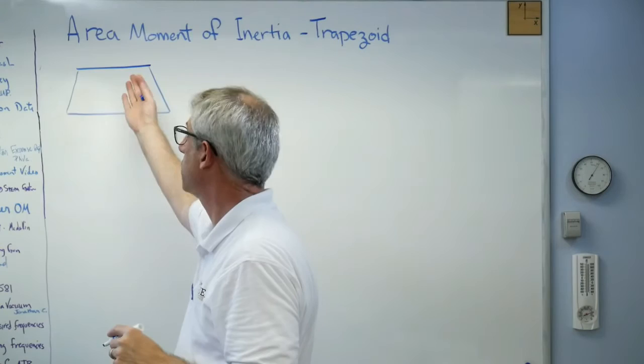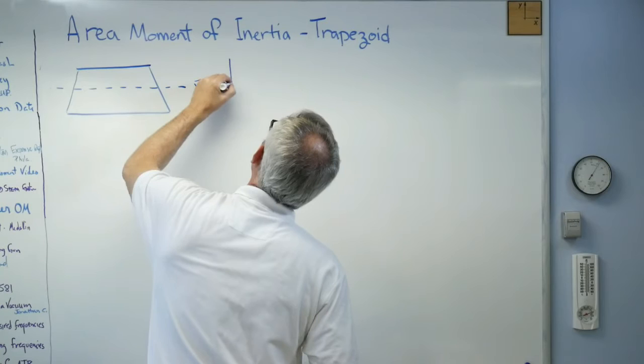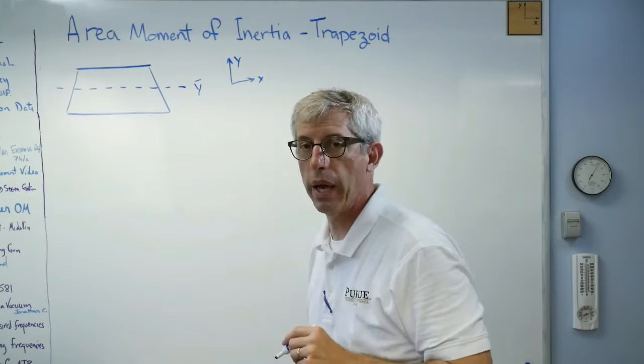These two sides don't need to be symmetric. It doesn't need to be symmetric side to side. And there's going to be a centroid here just like everything else, so let's make that, we'll call that y bar, y meaning the vertical distance with that being my coordinate system.